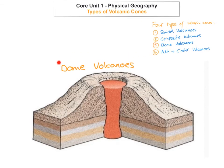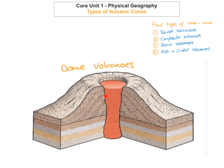The third one we're going to look at are dome volcanoes. Dome volcanoes have a very narrow base — the base is very narrow but they have really, really steep slopes. That is one of the key features of dome volcanoes: a narrow base but very steep slopes. The eruptions they have are very violent. They're composed of thick acidic lava and the lava is high in silica content, so it's very, very thick lava. An example of this would be Mount St. Helens in the USA.